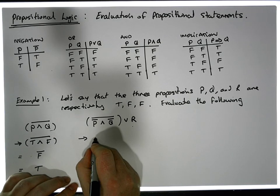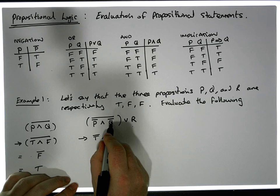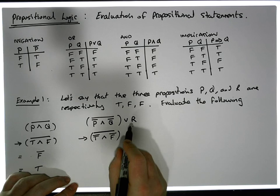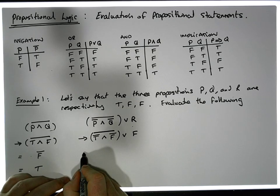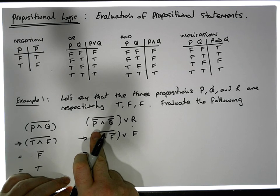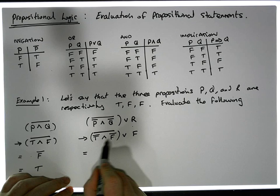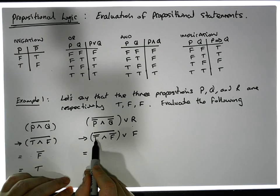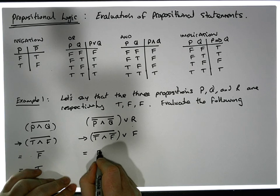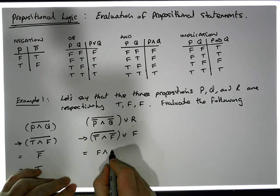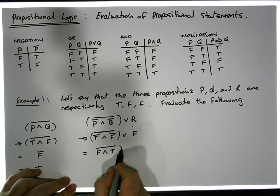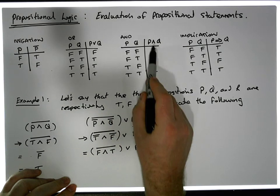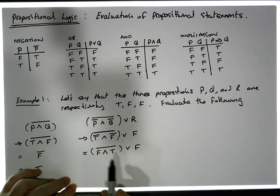So the P is going to be true, which needs to be negated, ANDed with Q which is false and needs to be negated, and this is all inside a negation, which needs to be ORed with false. Before we can do the AND, we need to negate both inner values first. The negation of true is false, and the negation of false is true, so this becomes false ANDed with true, which still needs to be all negated, ORed with false. Since false and true are not simultaneously true, the AND gives us false.